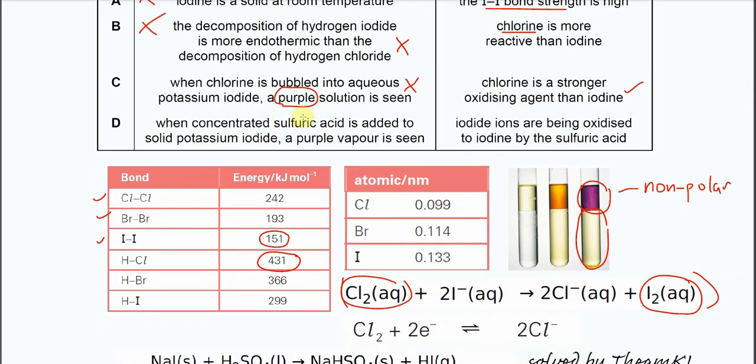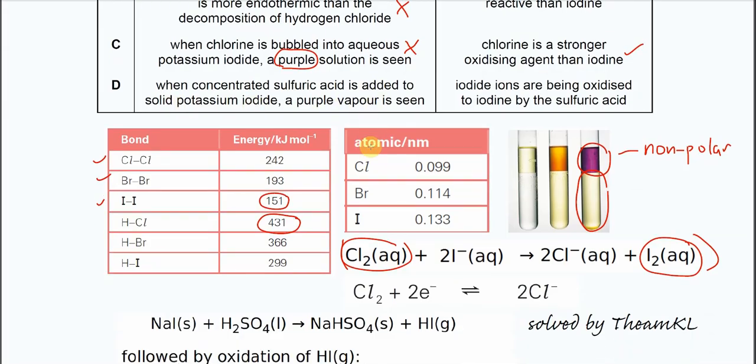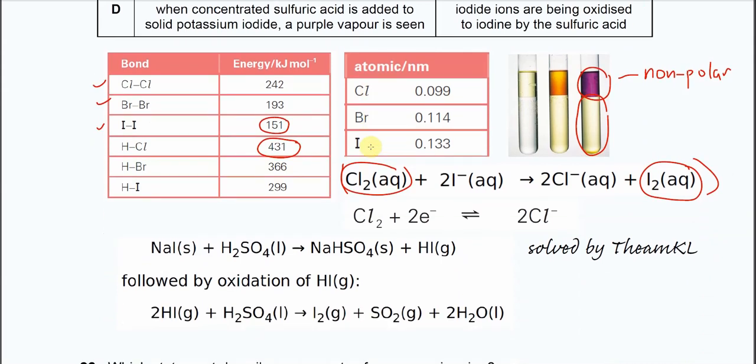For D, when concentrated sulfuric acid is added to solid potassium iodide, purple vapor is seen. Okay, let's look at the reaction, then we go to the explanation. So for this, sodium iodide with concentrated H2SO4, it will form this NaHSO4, this salt, and this hydrogen iodide. And this hydrogen iodide will further react with the H2SO4, and it will form the iodine, sulfur dioxide, and H2O. So it can form different sulfur products. It can form H2S, it can form the sulfur. So this is just one of the products.